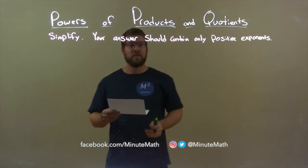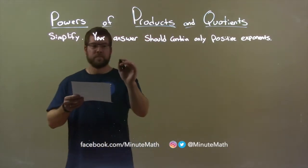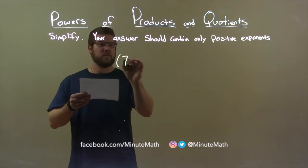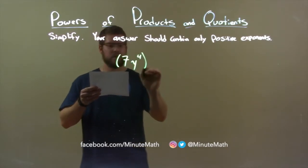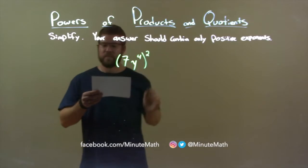So, if I was given this problem, 7y to the fourth power squared. Okay?